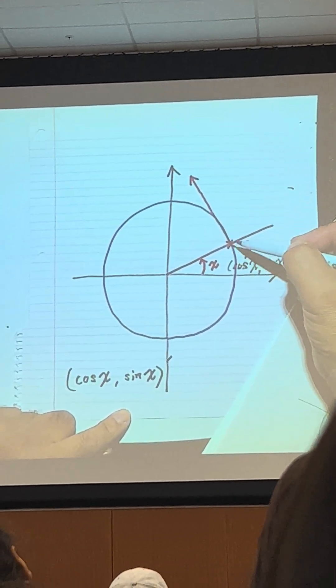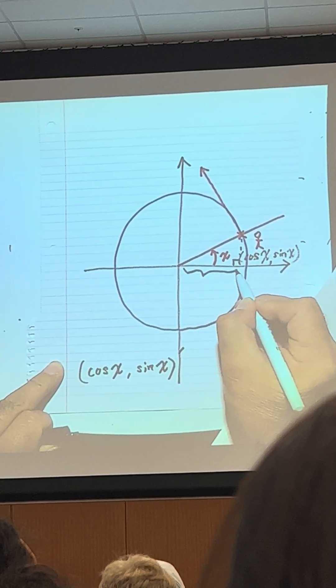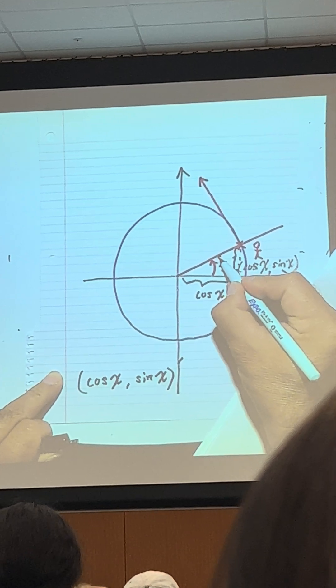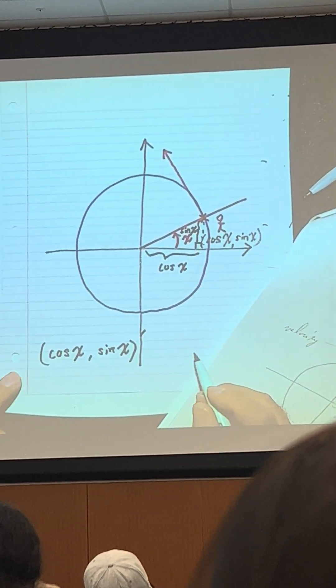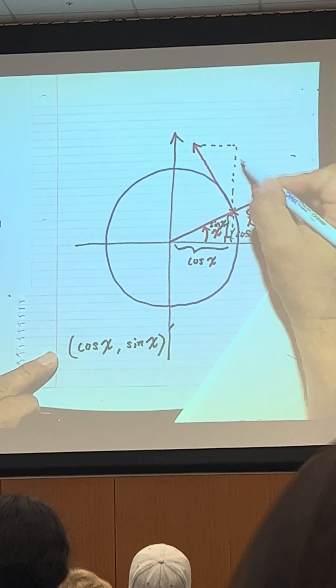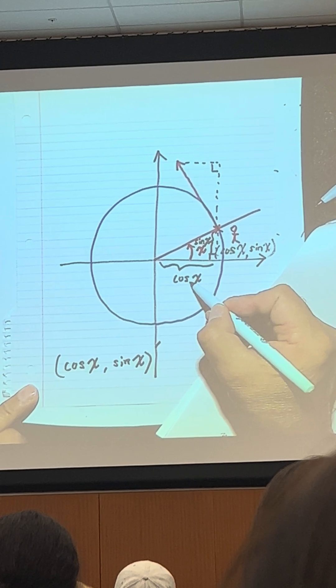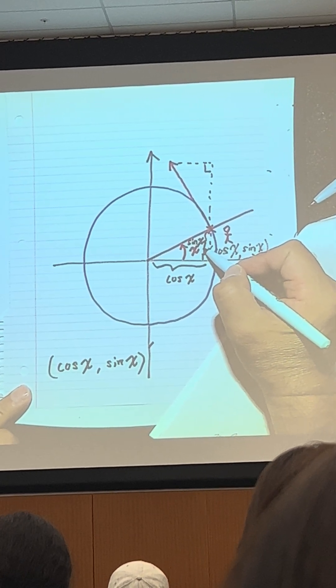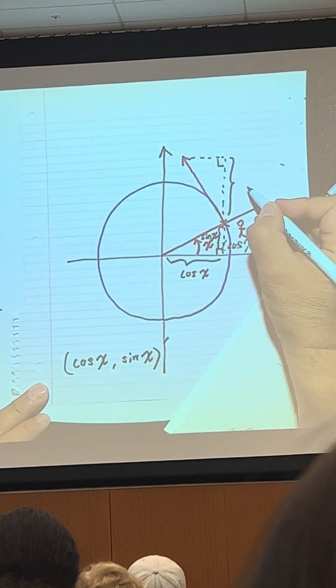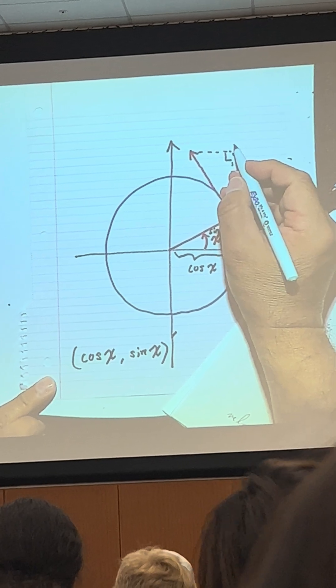But then now, what is this guy? If you look at the small triangle, this one is cosine x, and this one is sine x. Can you see it? But then, look at this guy. You see the same right triangle. Hypothesis is one, this one is cosine x, this one is sine x. Are you with me? What is this guy? This guy? Cosine of x. What is this guy? Negative sine of x. Oh, you're brilliant.